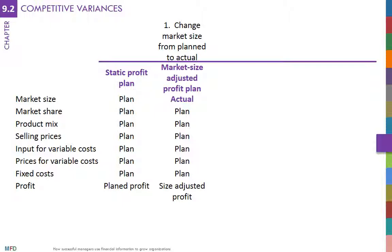This change affects the volume of sales. If the market was larger than planned, then the company should have sold more than expected. A larger volume not only affects revenues but also variable costs, because they vary with volume. The difference between the profit in the original profit plan and the profit estimated in this new profit plan is therefore the profit adjusted for changes in market size.